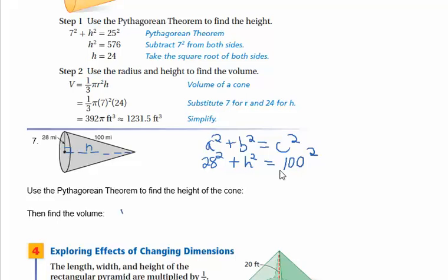Then find the volume using one-third times pi r squared — we can already find that part — times the height, which you will have found using the Pythagorean theorem in your first step.